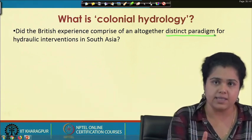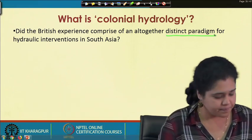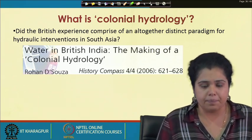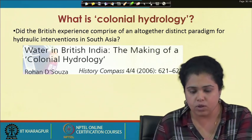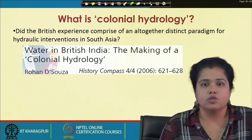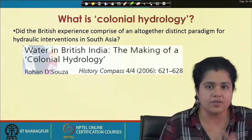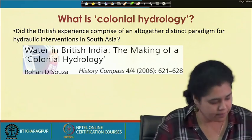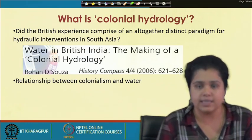We must talk about Rohan D'Souza and his article published in History Compass journal in 2006, because D'Souza came up with the term and conceptualized colonial hydrology in that article called 'Water in British India: The Making of Colonial Hydrology.' He asks us to understand colonial hydrology as a theoretical abstraction to the entire hydraulic experience of South Asia during the rule of the British, and to understand the relationship between water and colonialism during the colonial rule.